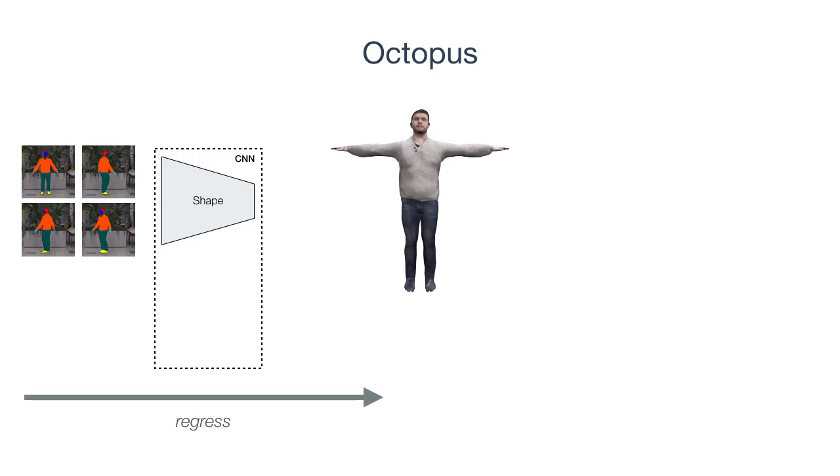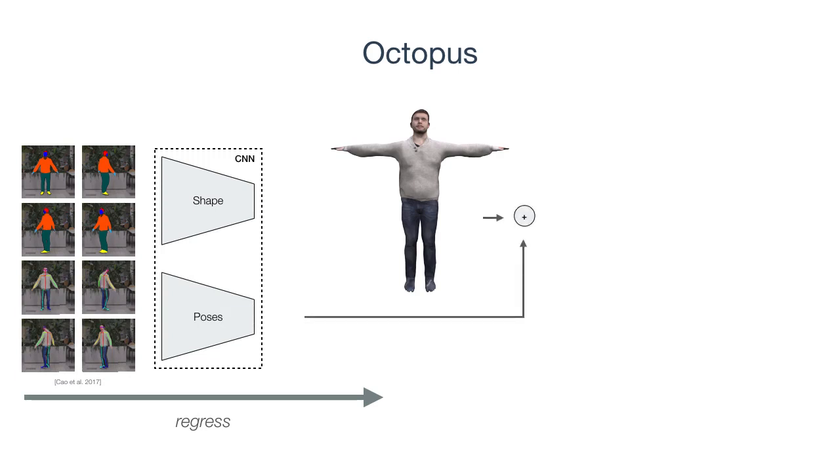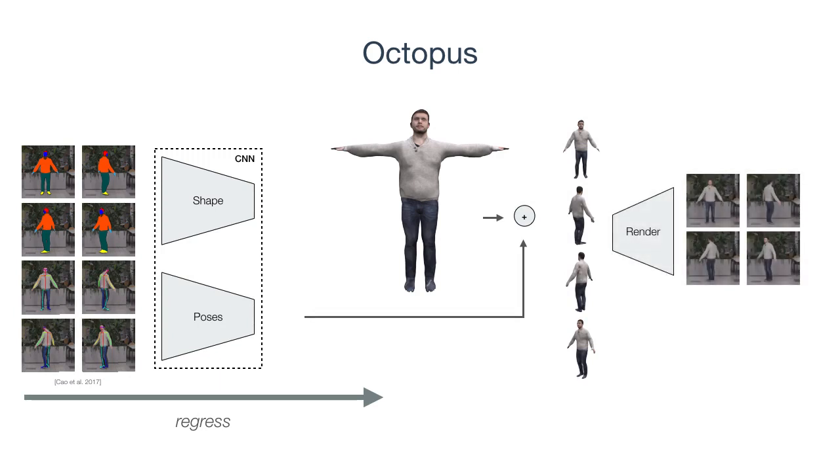To this end, we additionally predict 3D poses from 2D joint detections for each input view. This allows us to pose the predicted shape in each of the frames and render and compare with the input images. We can now refine the shape estimations via weakly supervised optimization at test time.